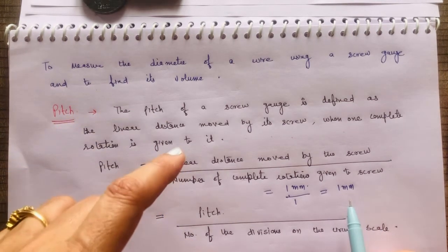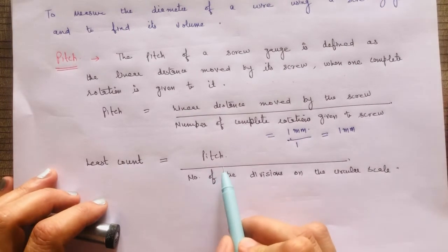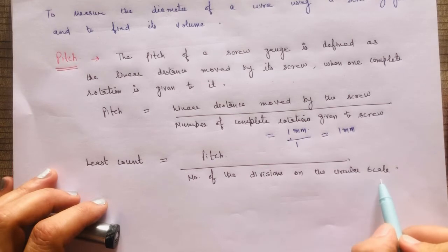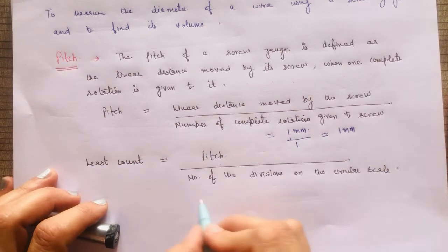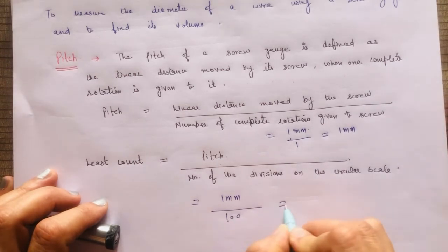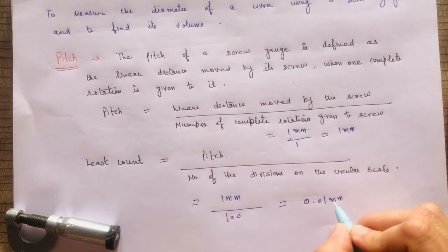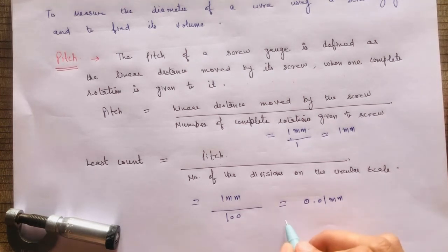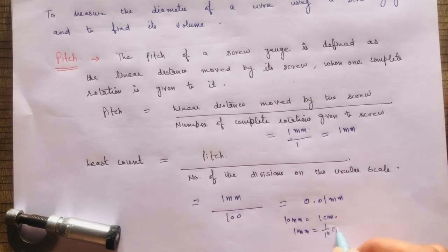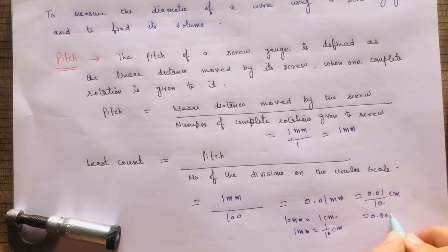The least count is defined as the ratio of pitch to the number of divisions on the circular scale. So least count equals pitch divided by number of divisions on the circular scale. Pitch is 1 mm and the number of divisions is 100, so least count equals 0.01 mm. In centimeters, since 1 mm equals 1/10 cm, the least count is 0.01 divided by 10, which equals 0.001 cm.